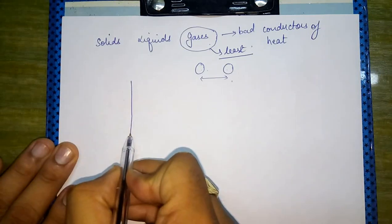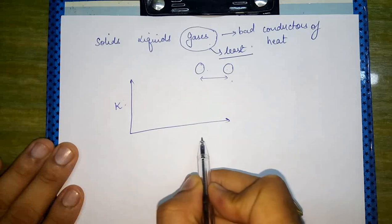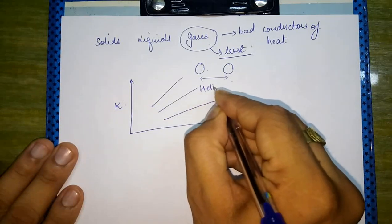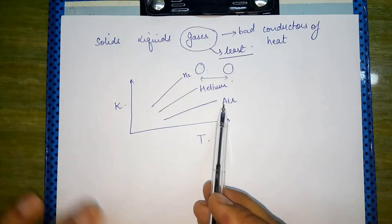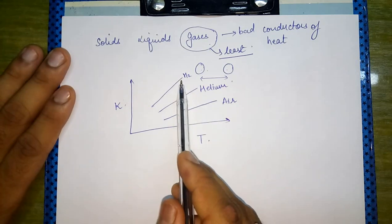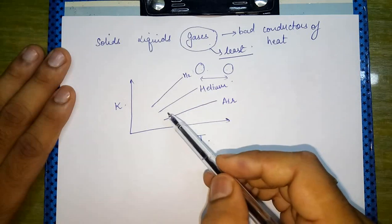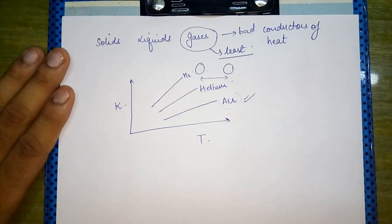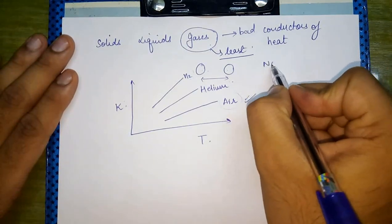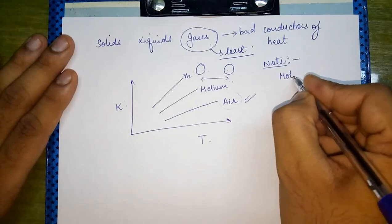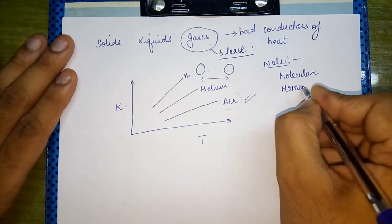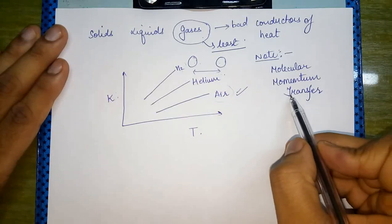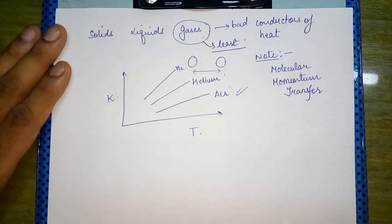If we have a graph with thermal conductivity on one axis and temperature on the other, then for gases: the slope is maximum in case of hydrogen, followed by helium, and the least is for air. Conduction in gases also takes place through molecular momentum transfer — a molecule moving at high speed with high energy collides with another molecule and transfers its energy.